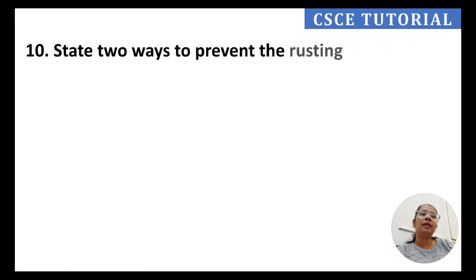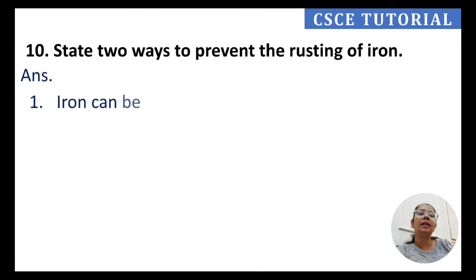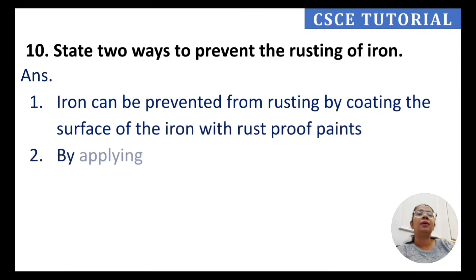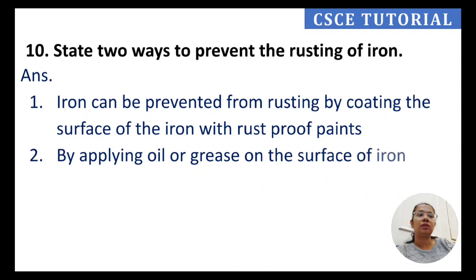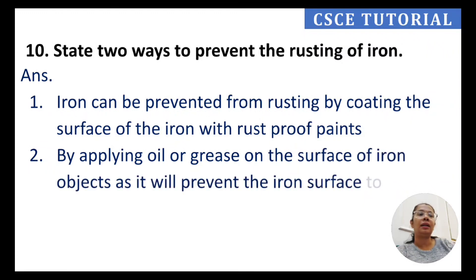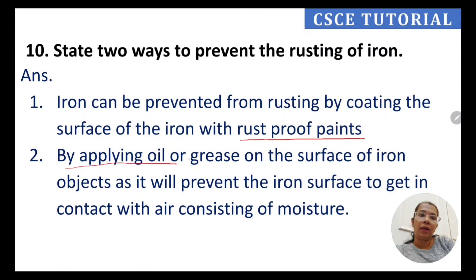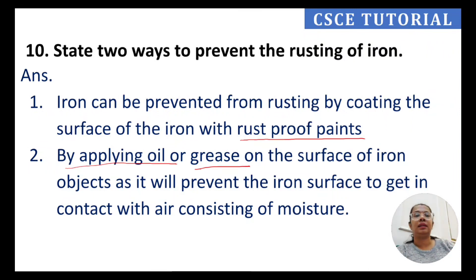Question 10: State two ways to prevent the rusting of iron. First: coat the surface of iron with rust-proof paints. Second: apply oil or grease on the surface of iron objects. Both methods prevent the iron surface from coming in contact with air and moisture, which cause rusting.